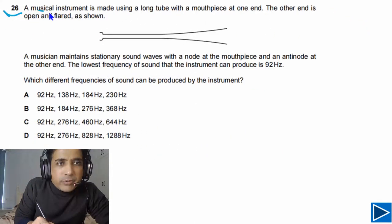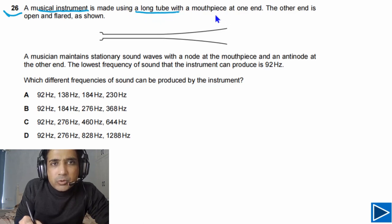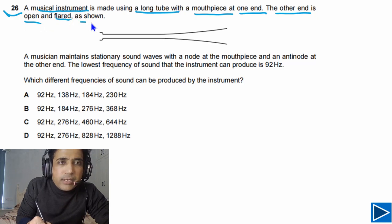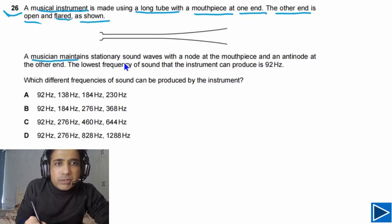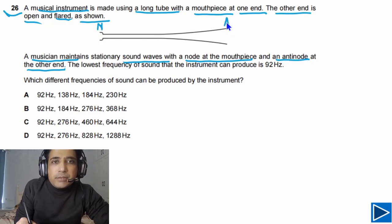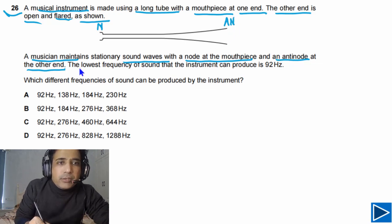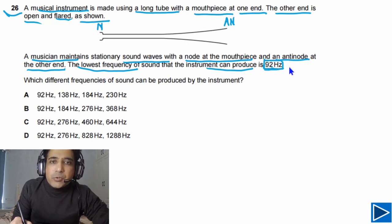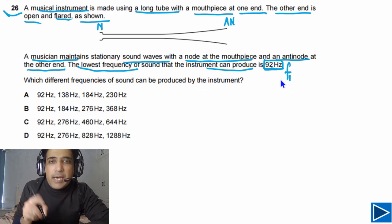For question number 26, a musical instrument is made from a long tube with a mouthpiece at one end and the other end open and flared. A musician maintains stationary sound waves with a node at the mouthpiece and an anti-node at the open end. The lowest frequency the instrument can produce is 92 Hz — this is the fundamental frequency, F1.